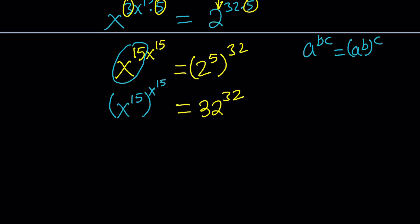What's really cool about this problem is, we kind of have, like, y to the y equals c to the c. So, that means y equals c. Do you see what I see? Hopefully, you do. So, from here, we get the following: x to the power 15 equals 32.